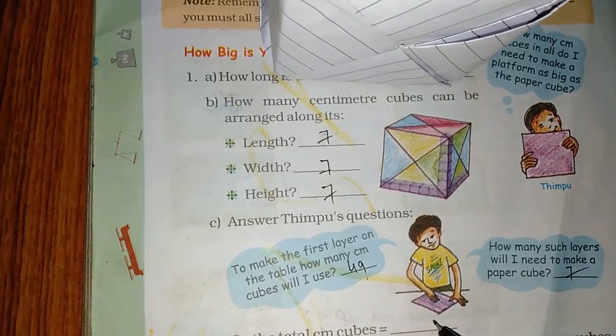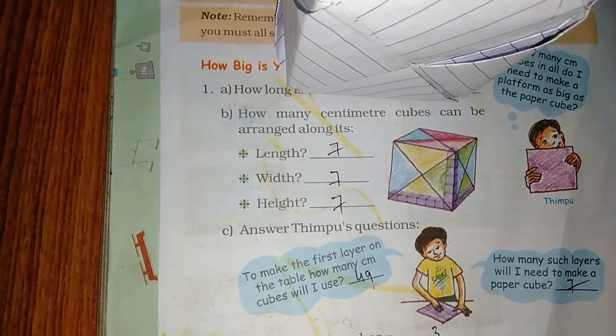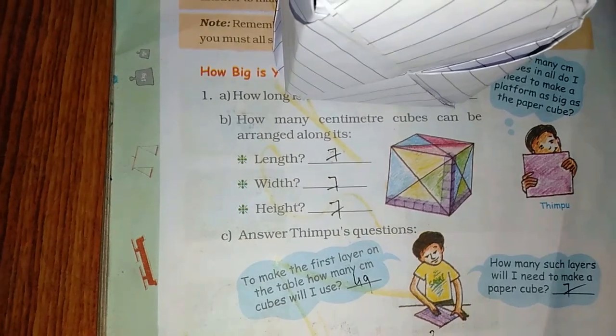How much will it be? Three... forty... three. Okay. 343.